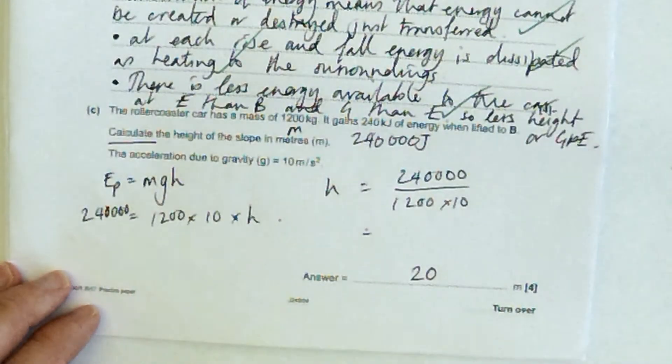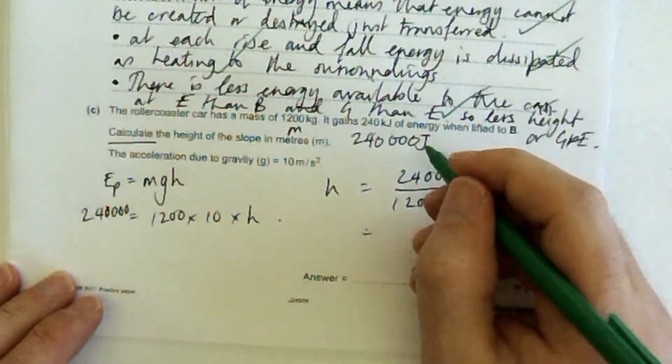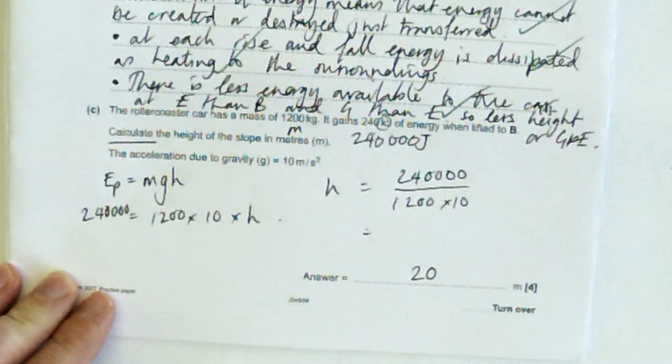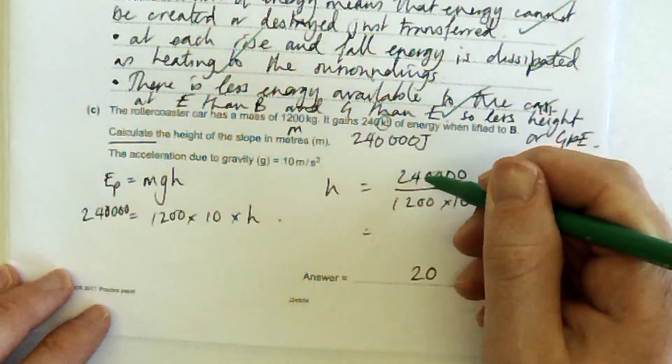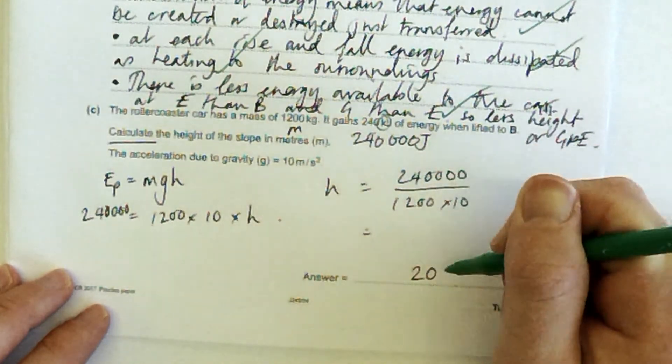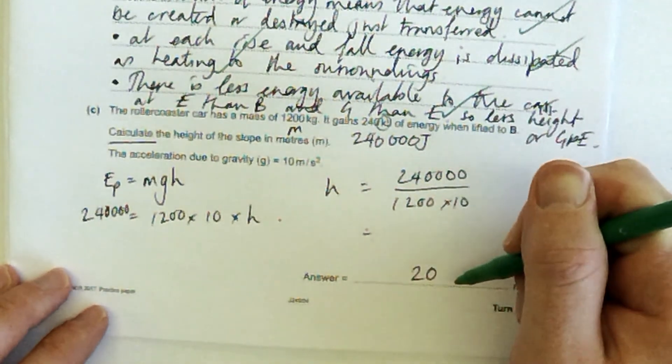Type all that in the calculator, being careful with my number of zeros, 20.